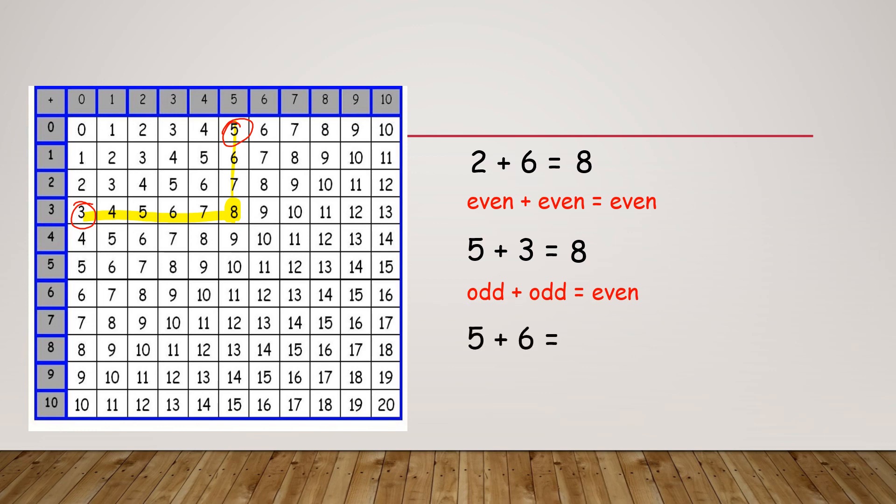And one more: 5 plus 6. 5 plus 6 equals 11. And 5 is an odd number and 6 is an even number. So now we have an odd number plus an even number which equals an odd number. So our pattern that we see here is that whenever you have two evens or two odds, they're going to equal an even number. But when you have one odd and one even, it equals an odd. And that would be true for all patterns with even and odd.